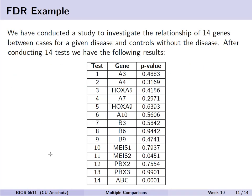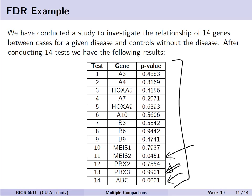In our simpler FDR example, we're going to consider a case where we've conducted a study to investigate the relationship of 14 genes between cases for a given disease and controls. After we conduct our 14 tests, we see a range of p-values — from the ABC gene being pretty significant at 0.0001, to MICE2 at 0.0451, to extremely insignificant p-values like 0.9901 for PBX3. Having done 14 tests, we're concerned about incorrectly rejecting the null hypothesis and want to control for the broader overall type 1 error.